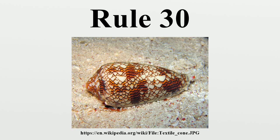Rule 30 is a one-dimensional binary cellular automaton rule introduced by Stephen Wolfram in 1983. Using Wolfram's classification scheme, Rule 30 is a Class 3 rule, displaying a periodic, chaotic behavior.